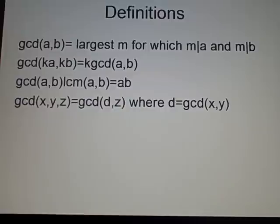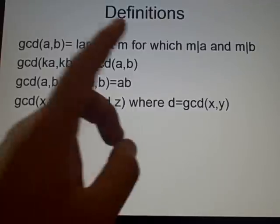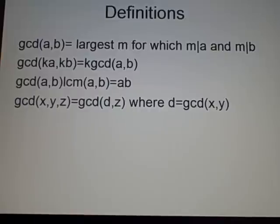And here, I found this in a question, it might be quite useful along the lines, that the greatest common divisor of x, y, z, as in three of them, is the greatest common divisor of d and z, where d is the greatest common divisor of x and y.